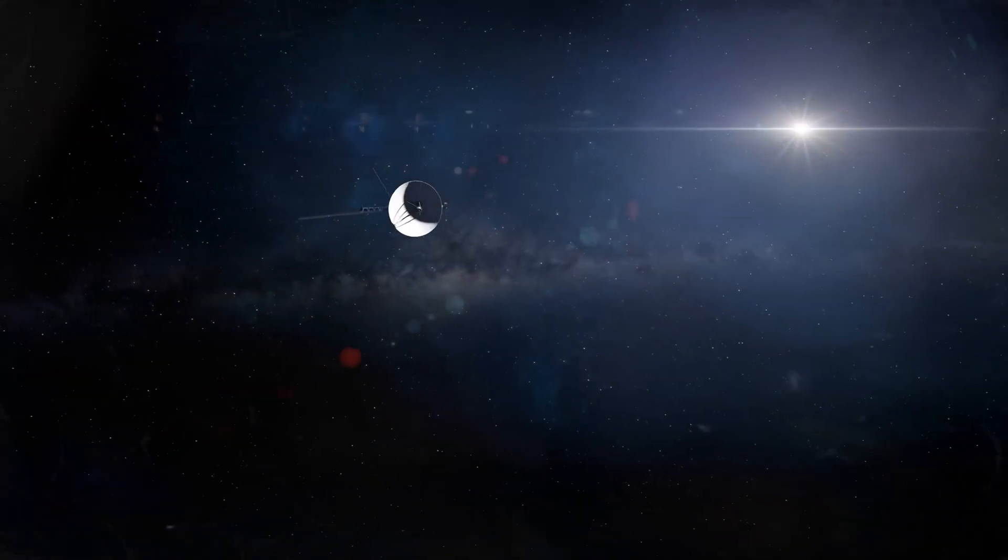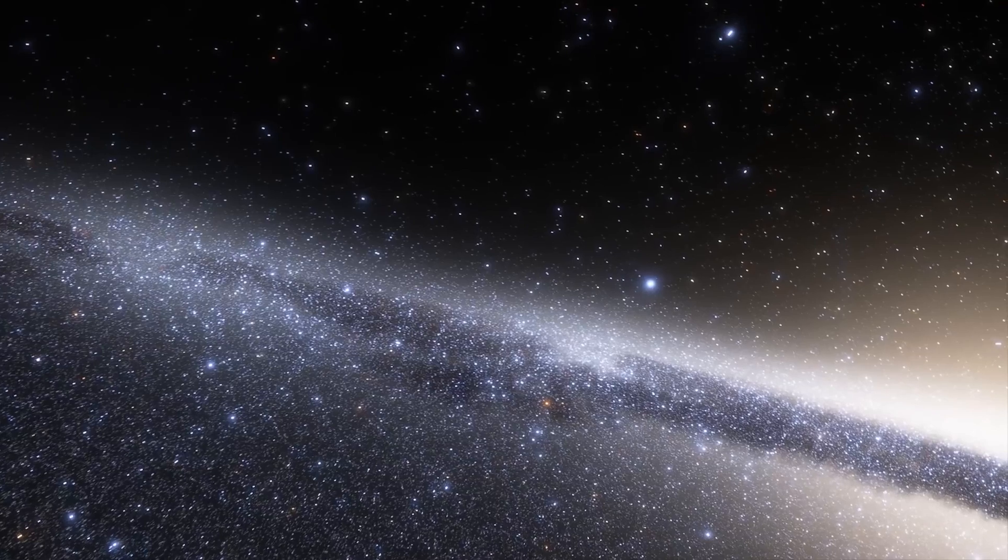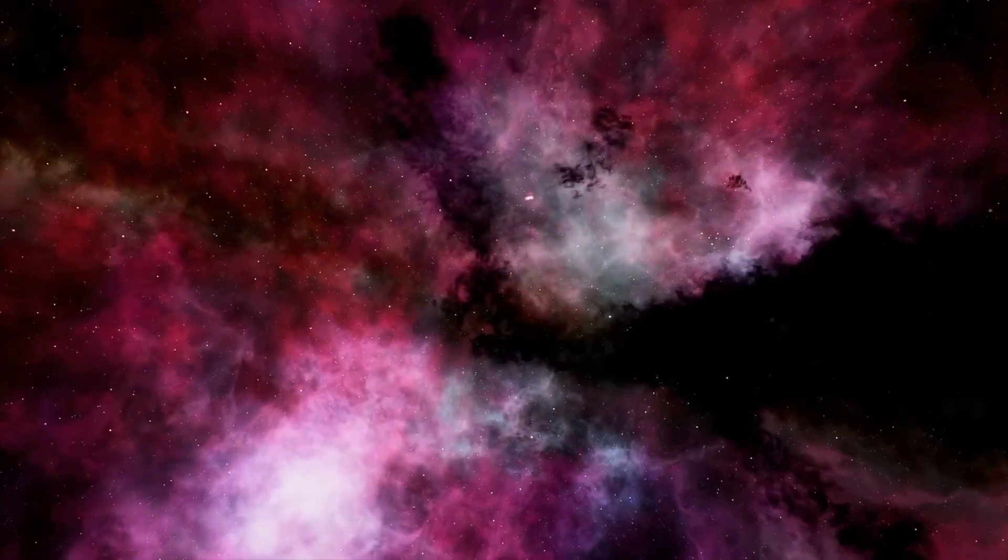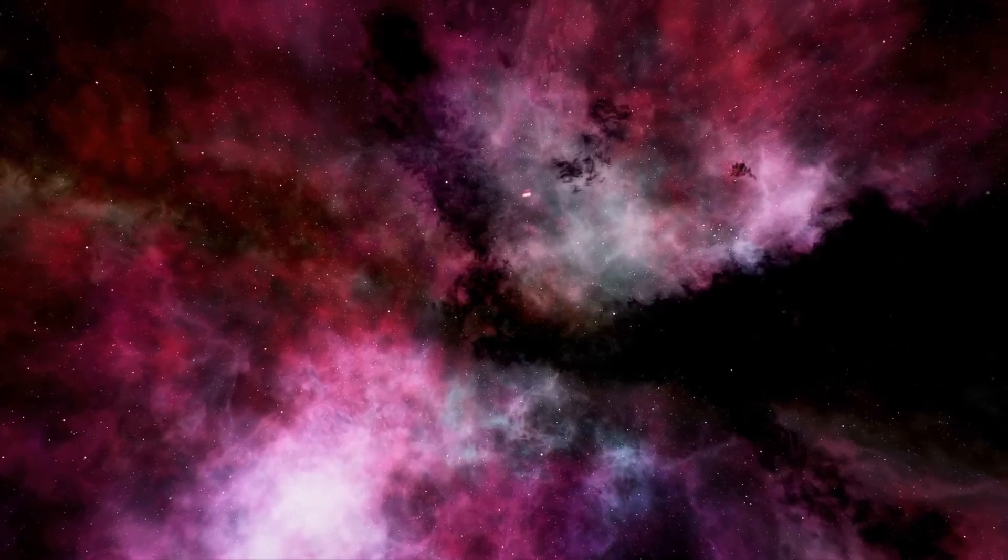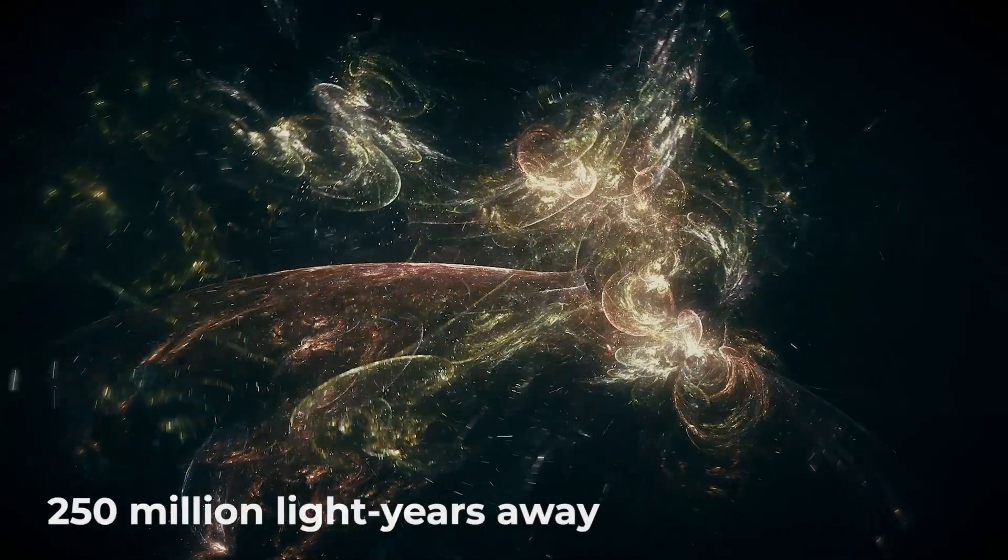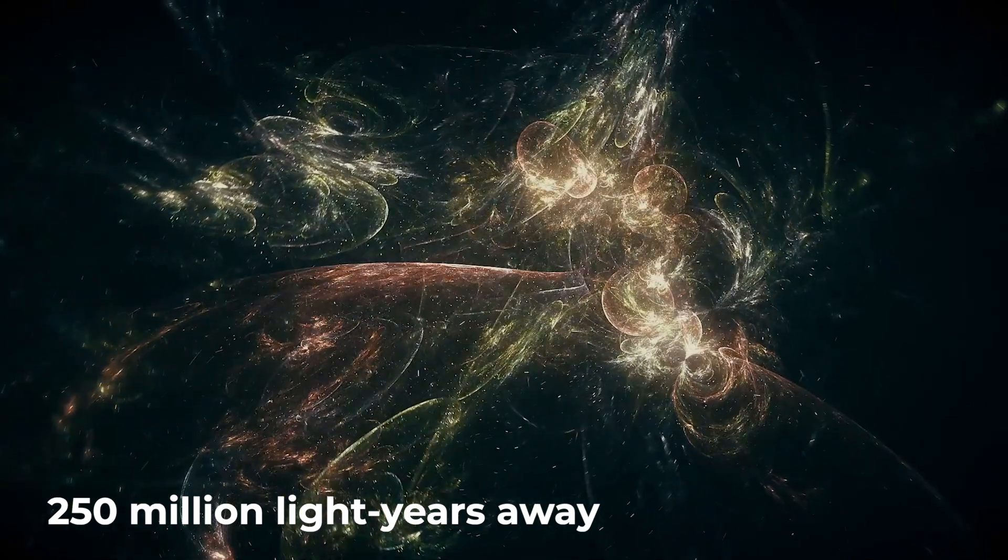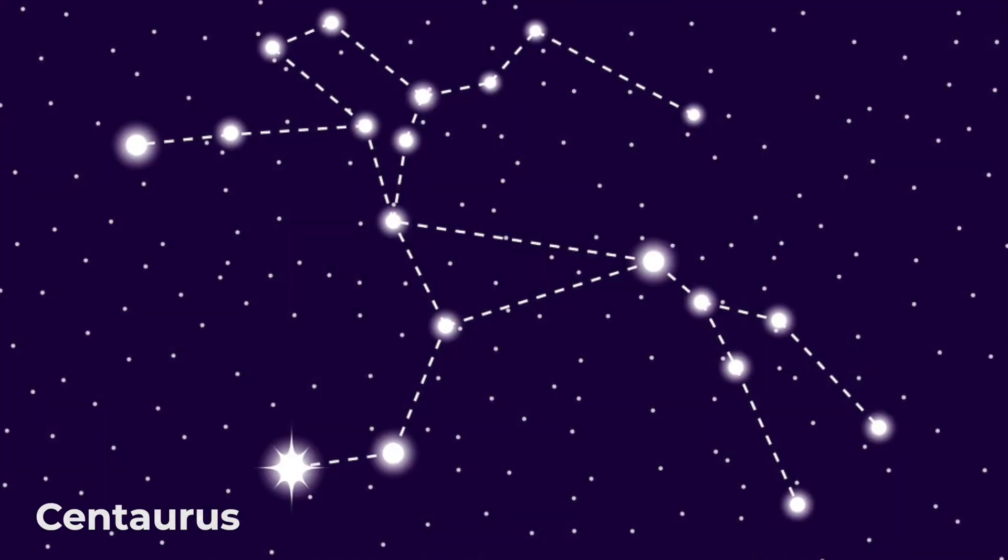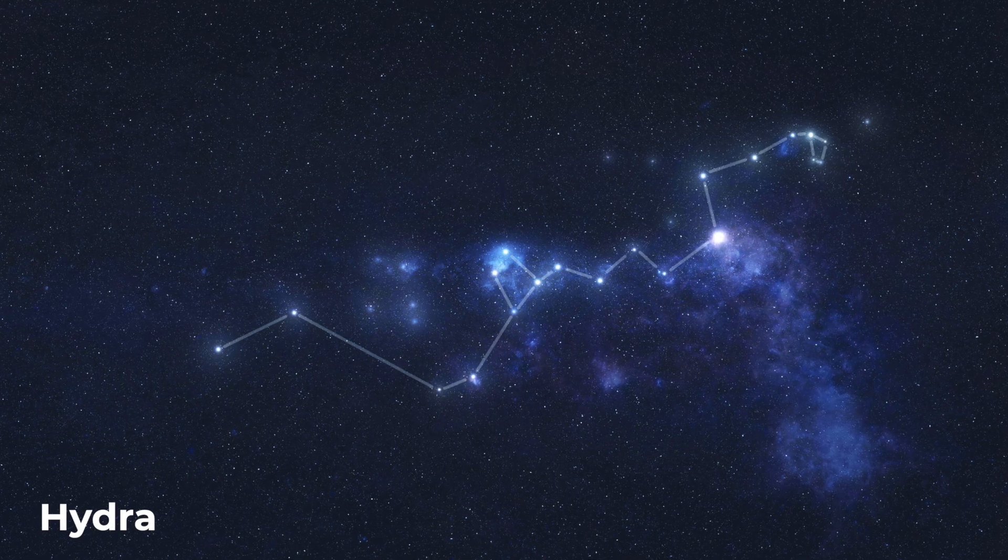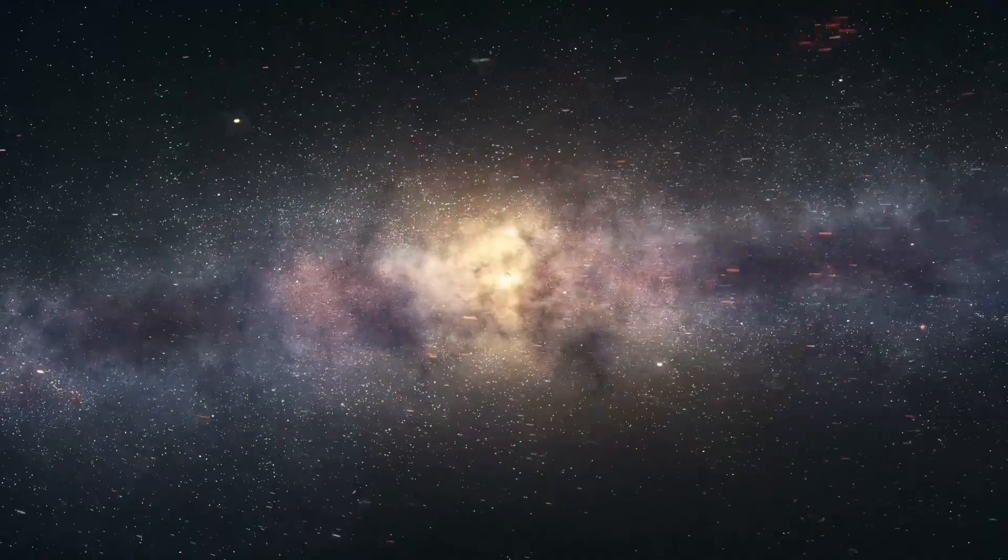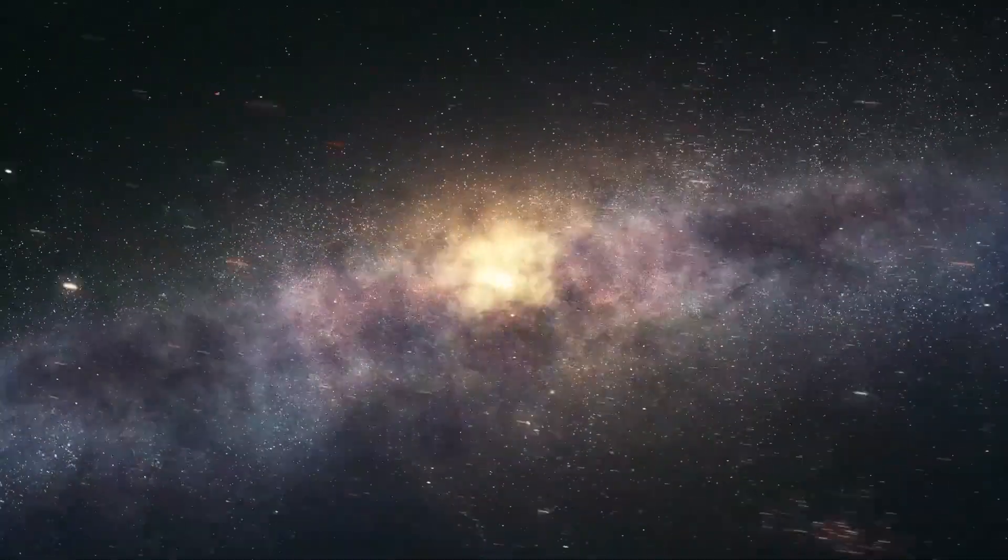But the surprises of space don't end there. Scientists have discovered another mysterious object that has a significant impact on the movement of galaxies in our region of the universe. This object has been named the Great Attractor. The Great Attractor is an area of space located about 250 million light-years away from us, in the direction of the constellations Centaurus and Hydra. Its discovery was made possible by studying the movement of stellar systems that were found to be drawn in that direction at extraordinary speeds.